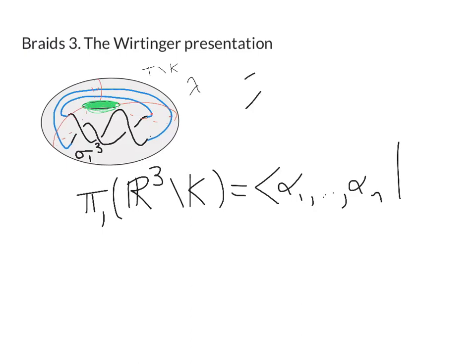And now the relations are just as they were before except with no mention of lambdas. Lambda is just equal to 1, we've killed lambda. So we get α₁ equals φ(α₁) all the way down to αₙ equals φ(αₙ). And that's our presentation.